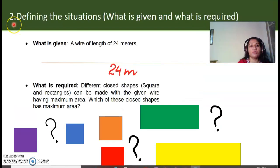And here we have step number 2 which states that defining the situations. So, we studied that we have to define the situation at point number 2. What is given and what is required? What is given? A wire of length 24 meters is given. Here you can see that I have drawn a wire of orange color which is of 24 meters. What is required? Different closed shapes can be made with the given wire. Which of these closed shapes has maximum area?